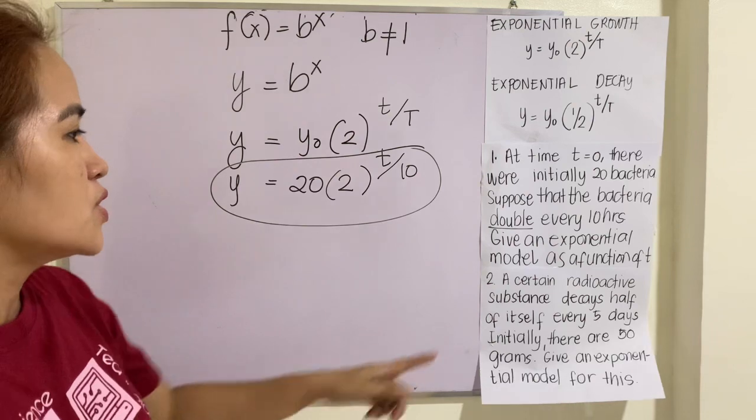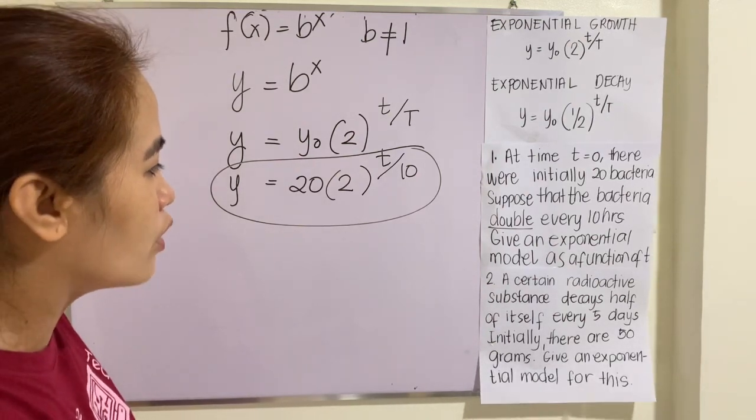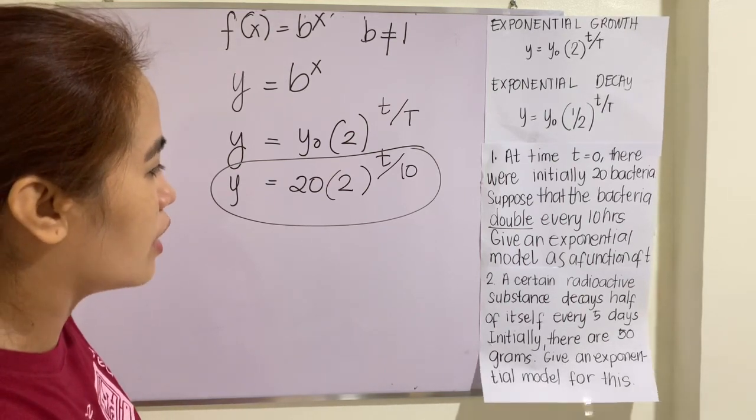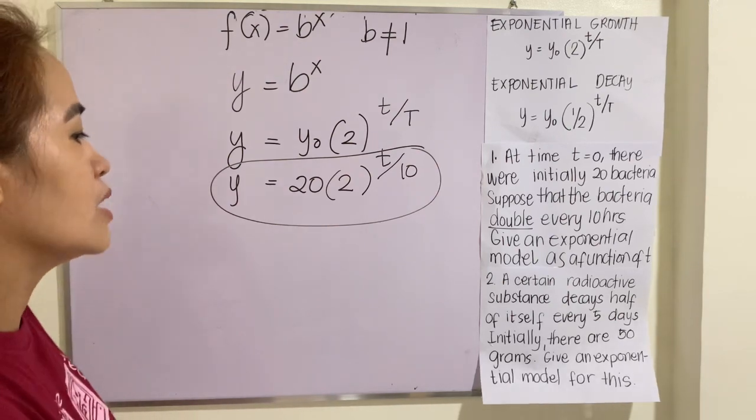For number two, a certain radioactive substance decays half of itself every five days. Initially, there are 50 grams. Give an exponential model for this.